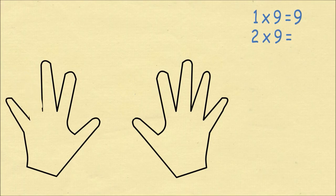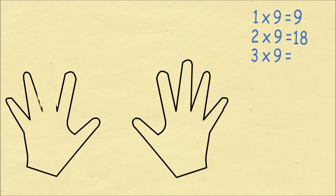For two times nine we bend the second finger. There's one finger to the left and eight fingers to the right to make eighteen. Three times nine we bend the third finger. We have two to the left and seven on the right to make twenty seven.